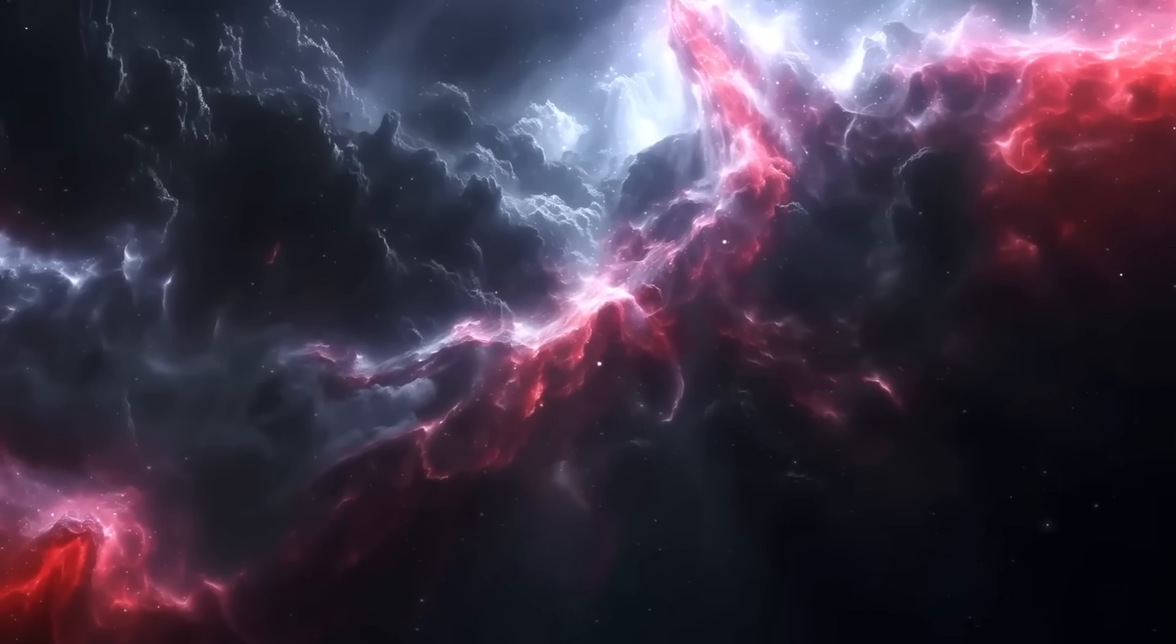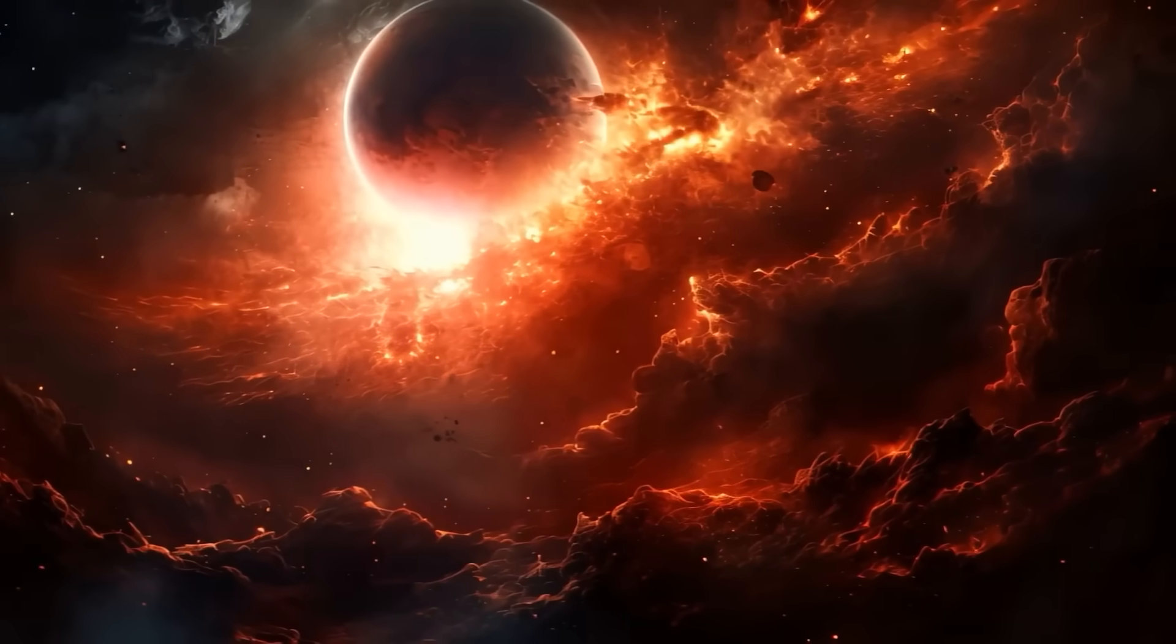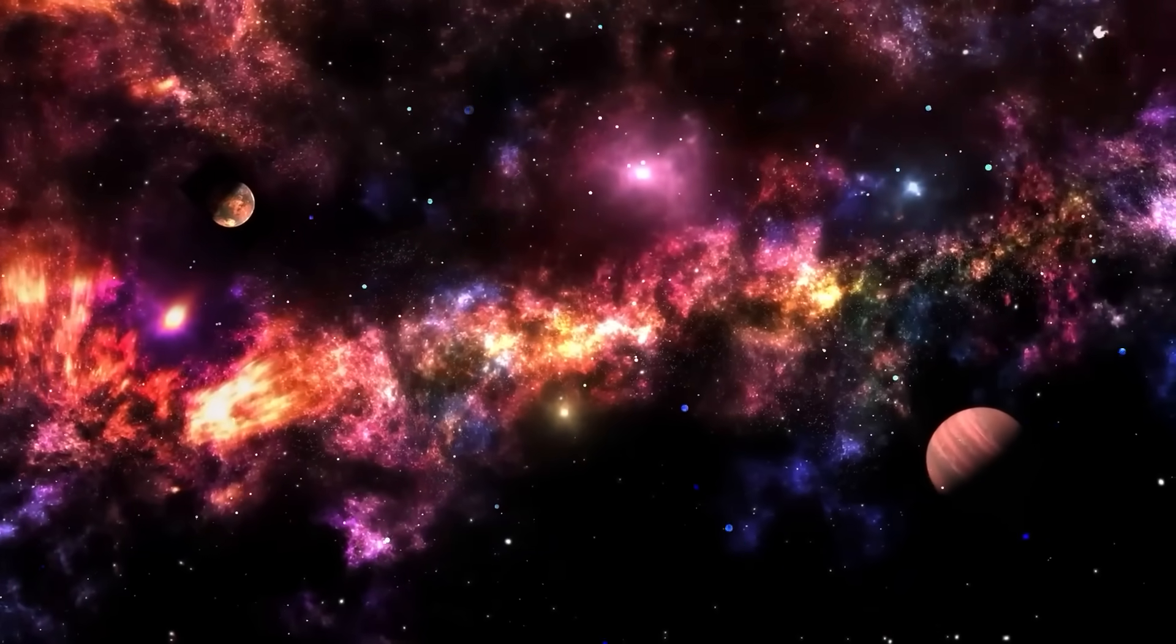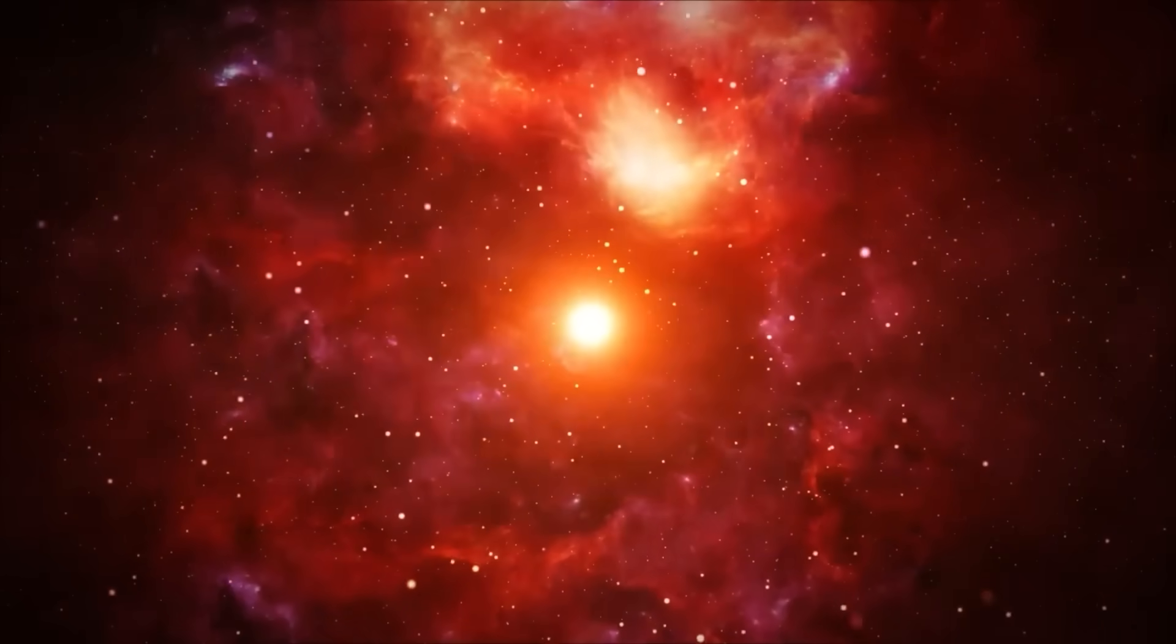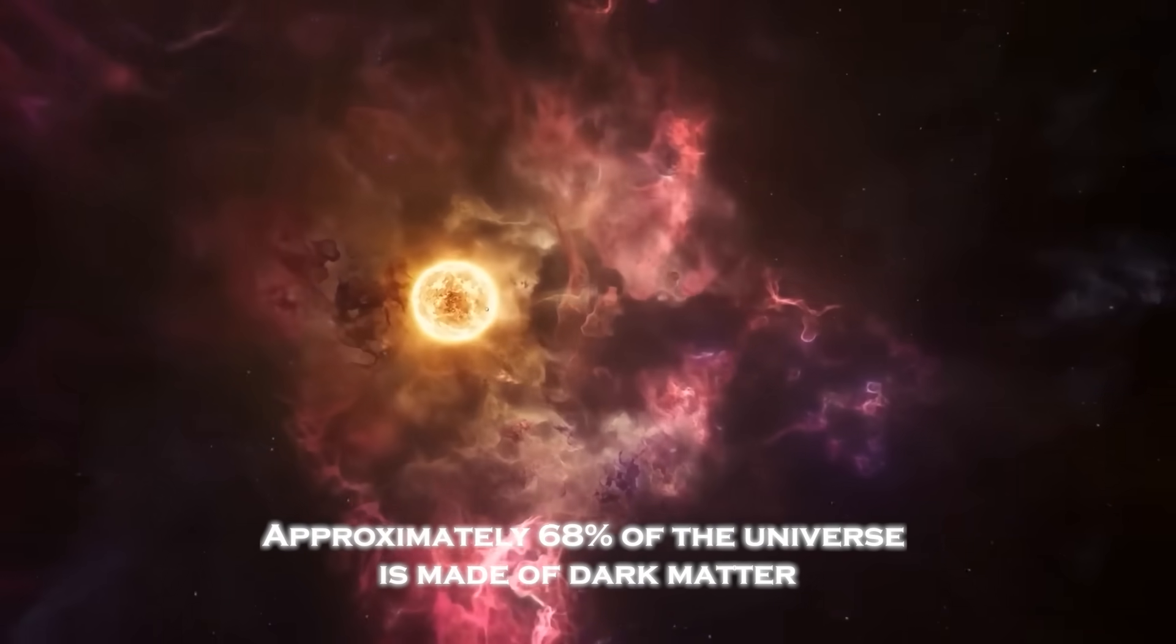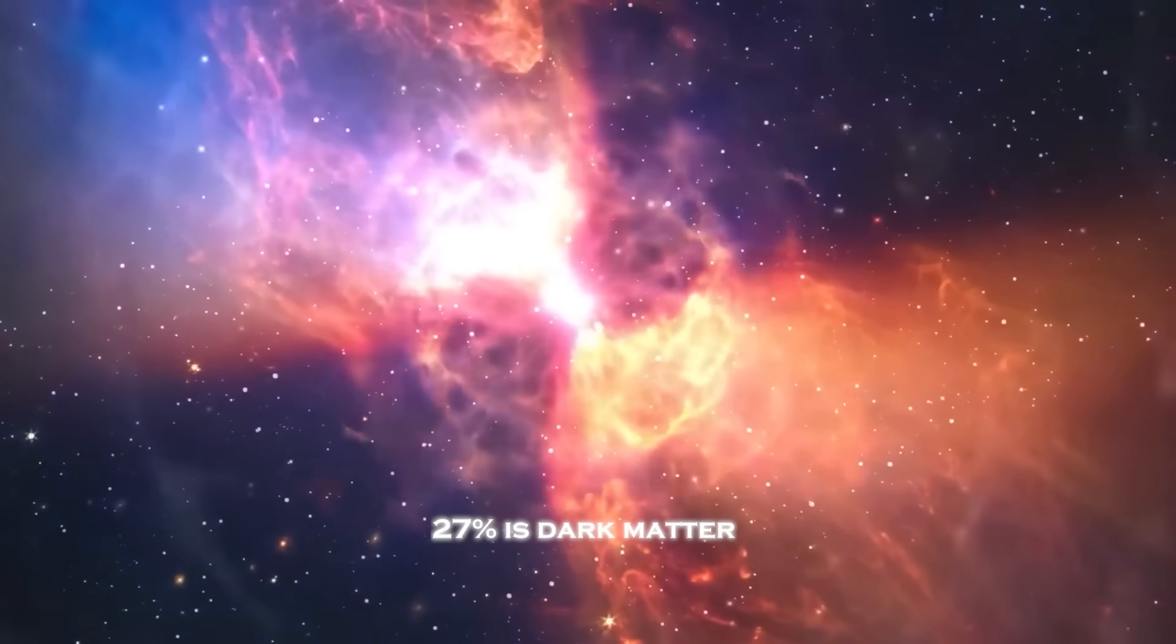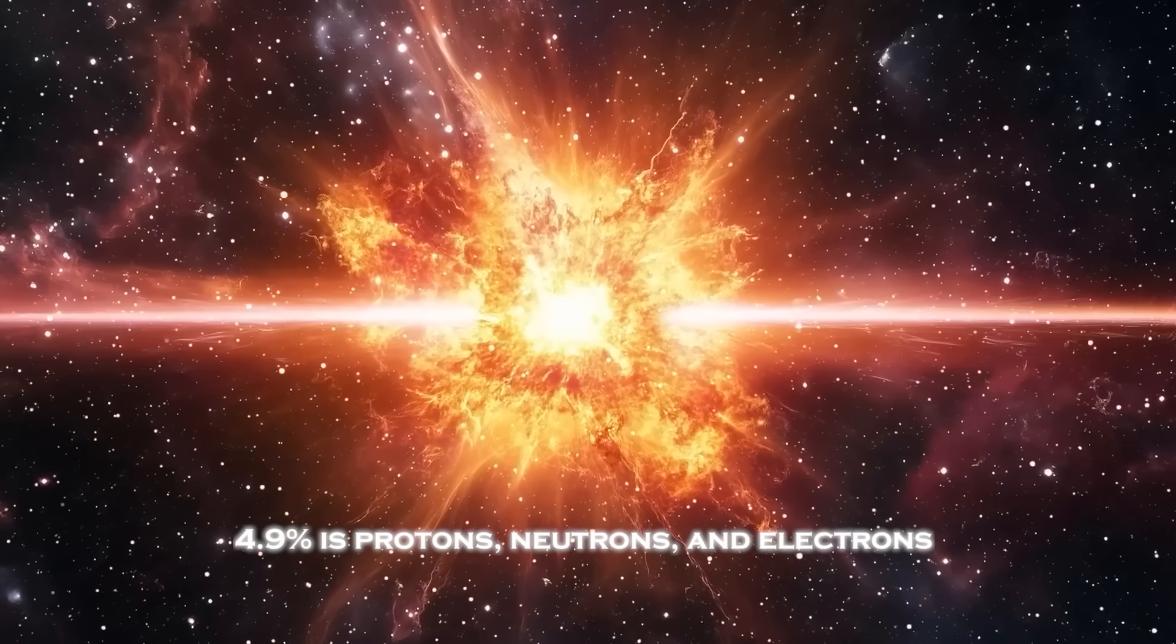By measuring the redshift of various sources at different distances and comparing their size and intrinsic brightness to what we can observe, we can reconstruct the full history of the universe's expansion. In addition, the way the universe expands is determined by the different types of matter and energy present in it. If this allows us to learn about its composition, approximately 68% of the universe is made of dark energy, equivalent to a cosmological constant, 27% is dark matter, and about 4.9% is protons, neutrons, and electrons.